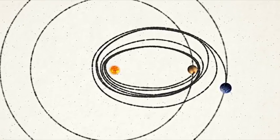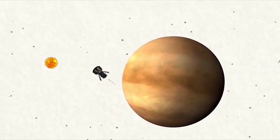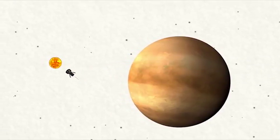In this case, rather than speeding up the spacecraft, as in a typical gravity assist, Venus slows down its sideways motion, so the spacecraft can get close to the Sun.